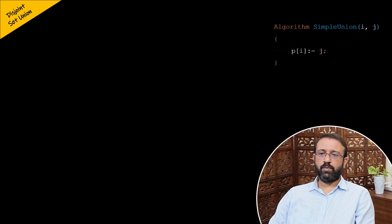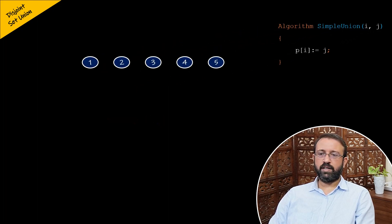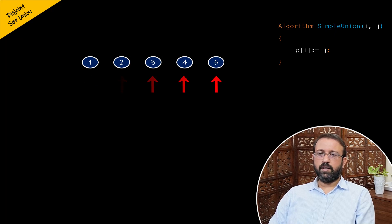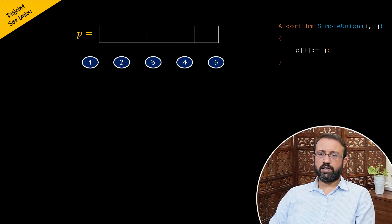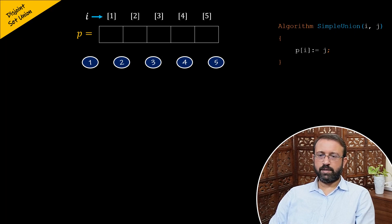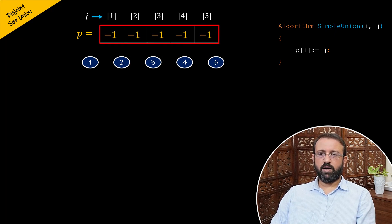Let us consider the case where we have five elements and each element is in a different disjoint set. Here we have five trees consisting of single elements, which is the root node. Let us store these nodes in the parent array known as P. Since we have five elements, the size of the array will be five. The index of the array P will represent each element and the value stored at that index will represent the parent of that element. Since each element is in a disjoint set, the value stored at all the indices for array P will be negative one, since each element is a root of its disjoint set.